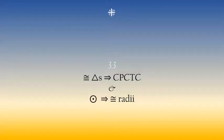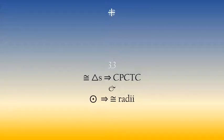In chapter 3 section 3, we add two more reasons to the system. If we have congruent triangles, then corresponding parts of those congruent triangles are congruent. And if we have a circle, then all radii of that circle are congruent.